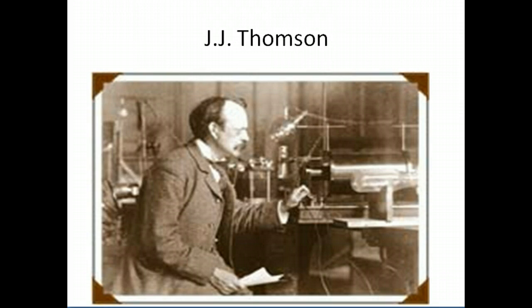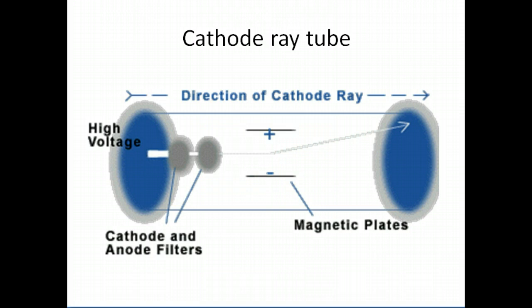J.J. Thompson picked up where Crooks left off and also did work with cathode ray tubes. Thompson placed a positively charged plate and a negatively charged plate on either side of the cathode ray tube. Since we now knew the beam was a beam of particles, Thompson wanted to know their charge. The particles were deflected towards the positive plate, so Thompson concluded they were negatively charged particles. He is credited with discovering the electron.